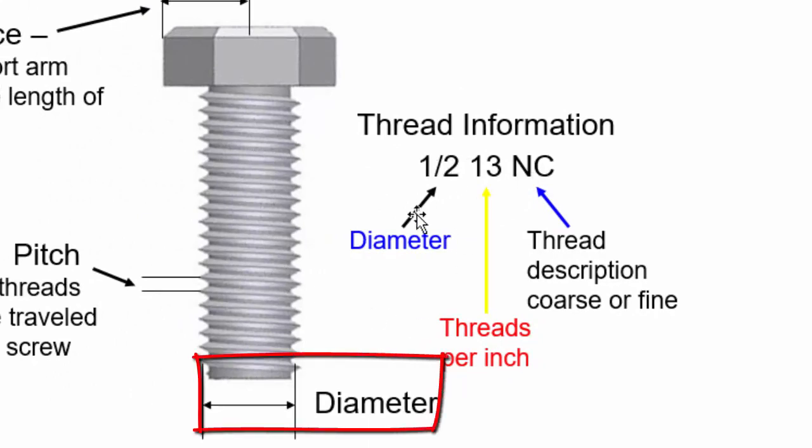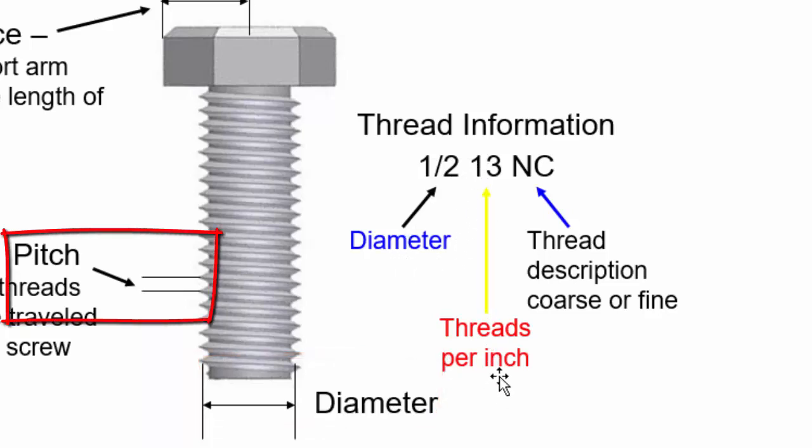Half, the first number, is the diameter. The second number is the threads per inch, or the pitch, which is the distance. It's actually the distance between the threads. And NC is the thread description, coarse or fine. This is national coarse. So it's a half inch diameter, 13 threads per inch, national coarse.